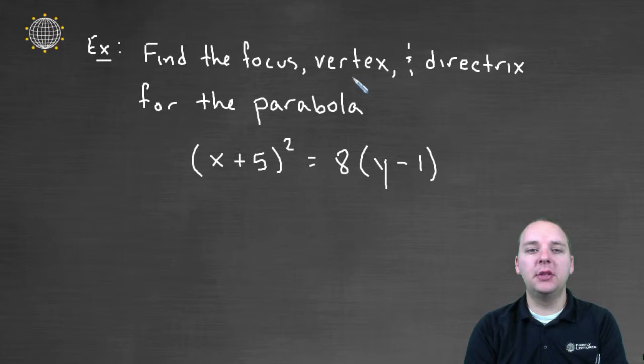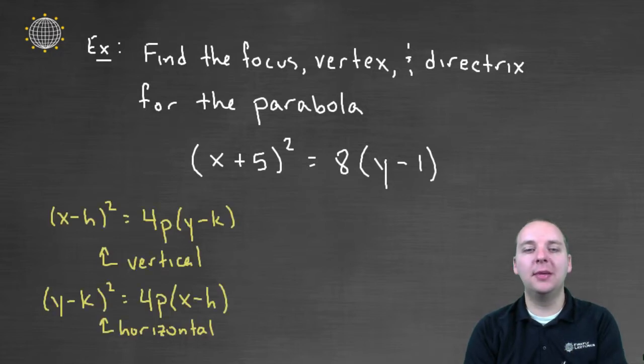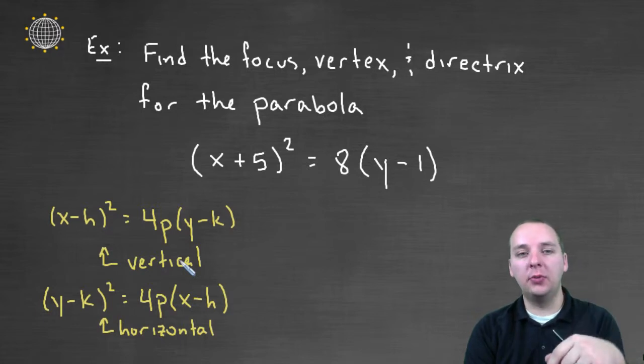So basically this boils down to remembering the basic template, the basic setup of the formula for a parabola. It's one of two formulas. It's either (x - h)² = 4p(y - k), and that's if the parabola opens upwards or downwards.